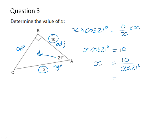If you work out 10 divided by cos 21 on your calculator, you will get 10.71.